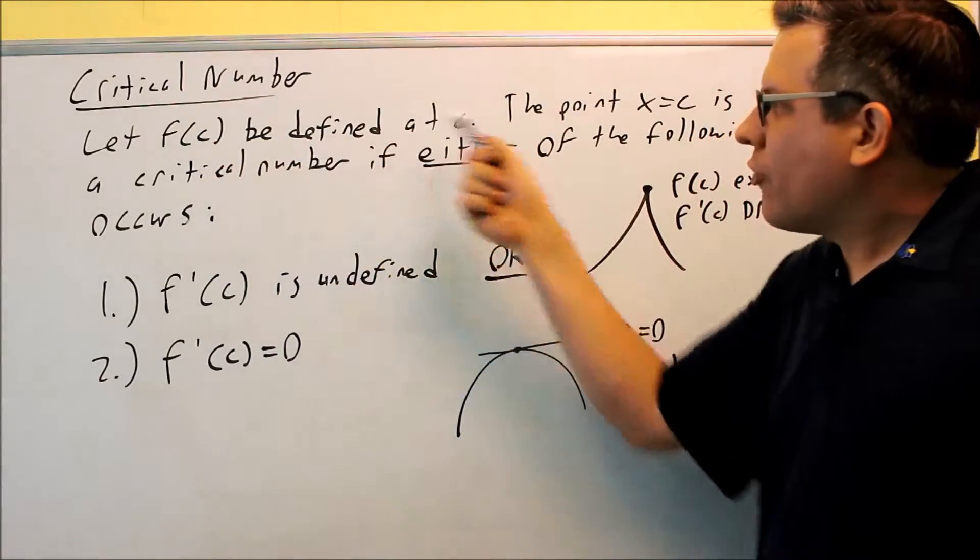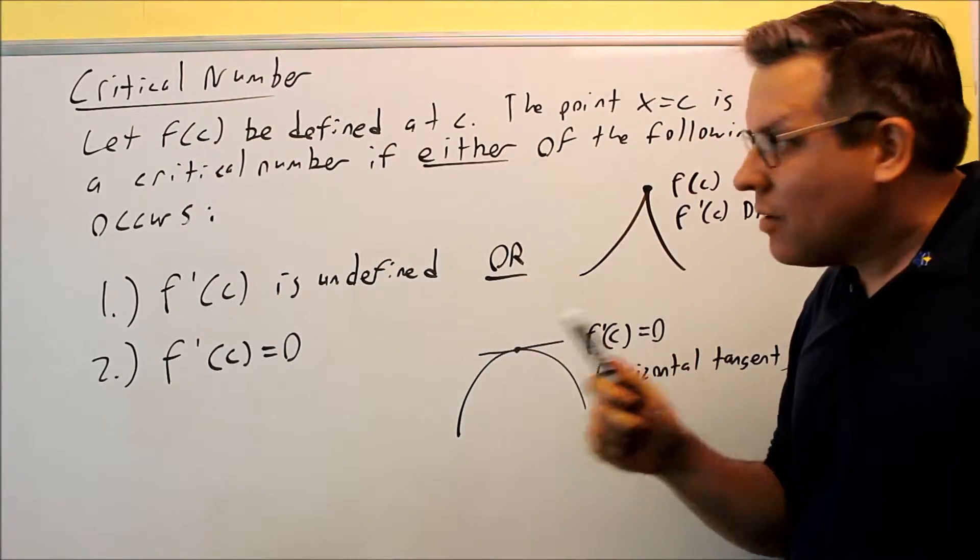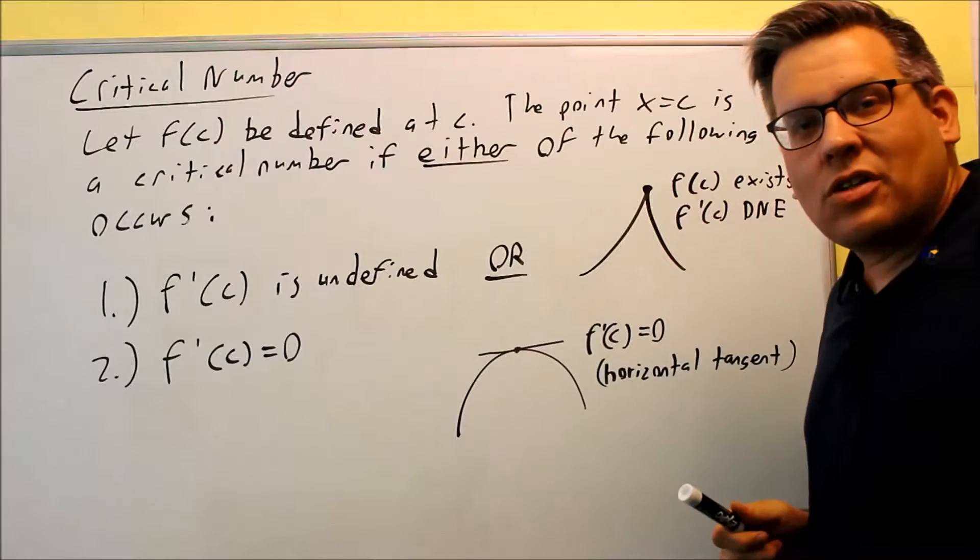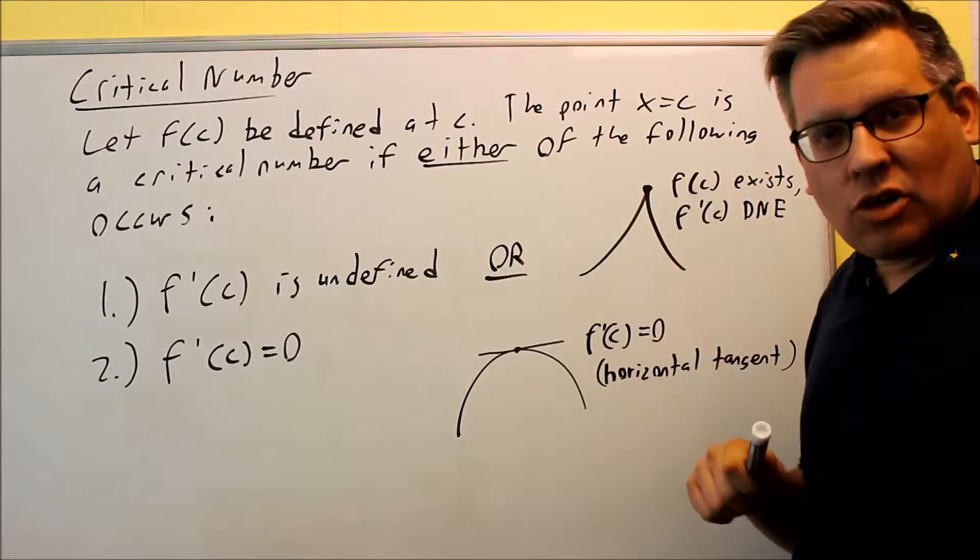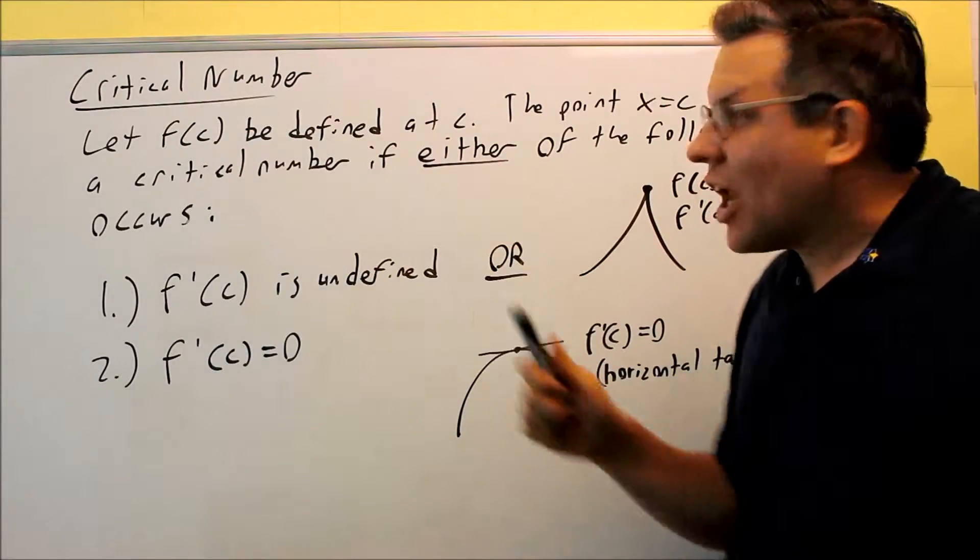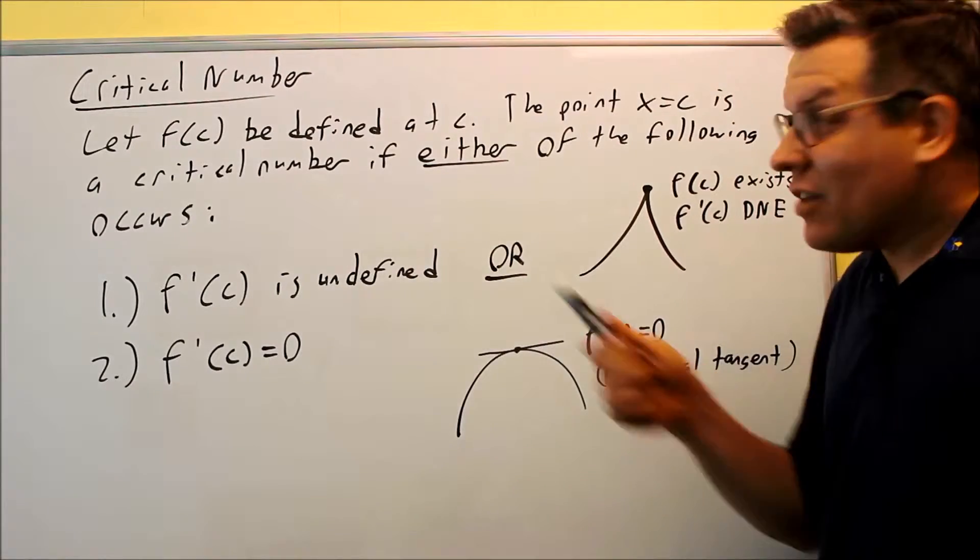First, in order for there to be a critical number at C, F of C has to be defined. I can't have any vertical asymptotes or anything happening. It's got to be defined on the original function. So, at C, it's got to be defined first of all.